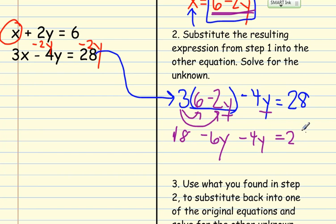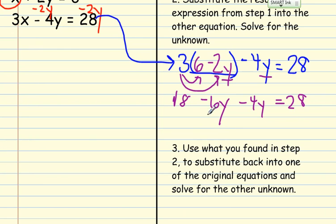Do you see what we're going to do next to get y alone and solve for that one unknown? Combine like terms. So we have a minus 10y when I combine negative 6y and negative 4y. We still have an 18 over here, equals 28.